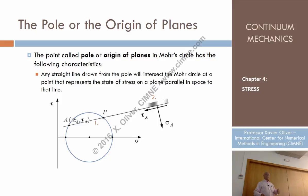then, the coordinates sigma and tau of that point is precisely the sigma and tau, the stresses that, according to the Mohr circle principle and criteria, act on that plane.